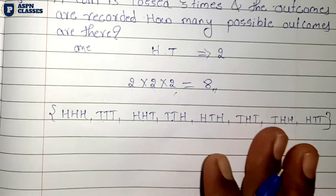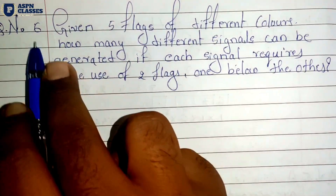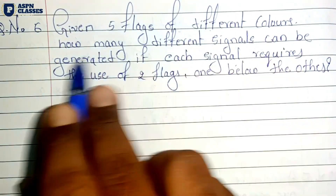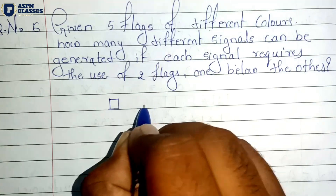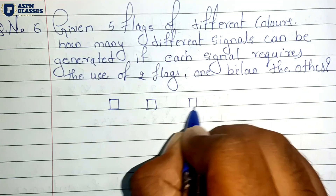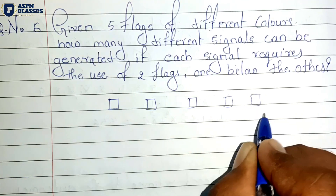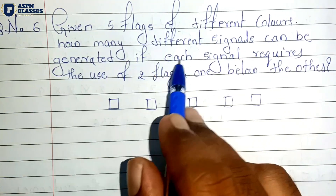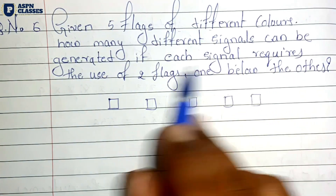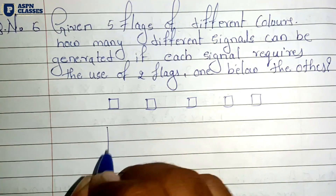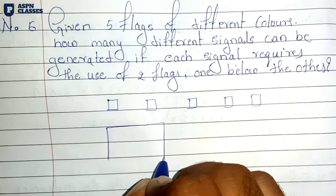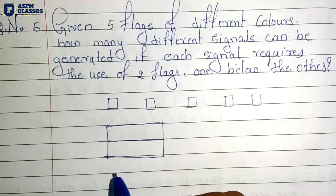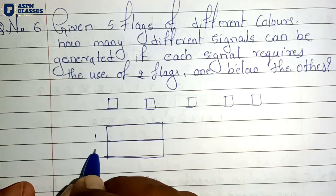The last question, number six: there are 5 flags of different colors. How many different signals can be generated if each signal requires the use of two flags?